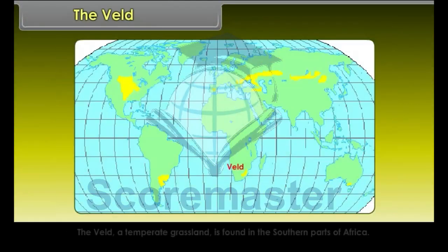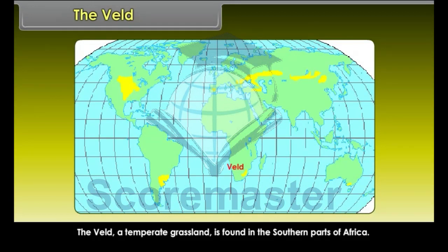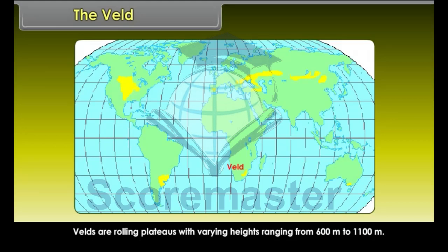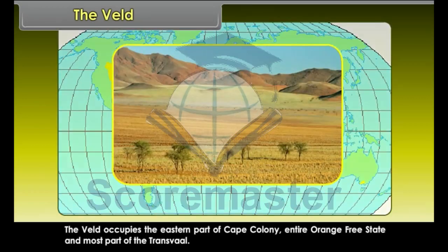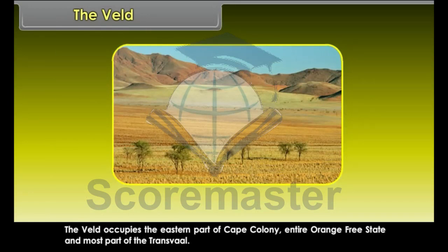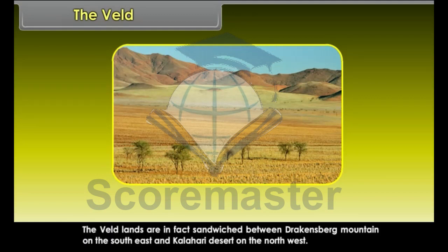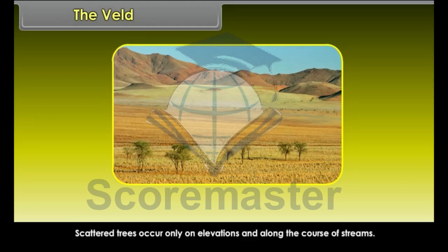The Veld is a temperate grassland found in the southern parts of Africa. Velds are rolling plateaus with varying heights ranging from 600 meters to 1,100 meters. The Veld occupies the eastern part of Cape Colony, the entire Orange Free State, and most part of the Transvaal. The Veld lands are sandwiched between the Drakensberg Mountains on the southeast and the Kalahari Desert on the northwest. Scattered trees occur only on elevations and along the course of streams.